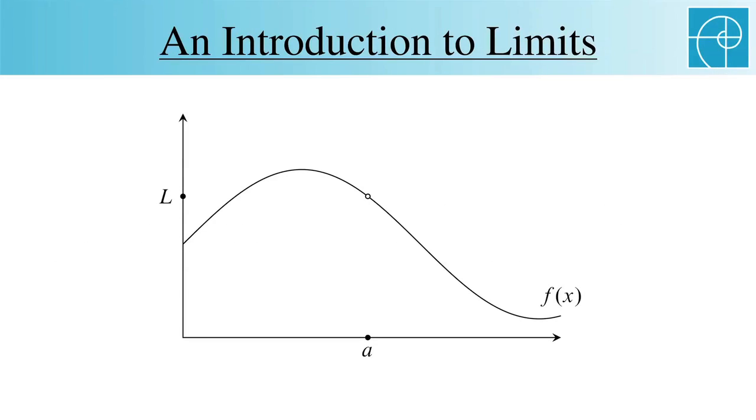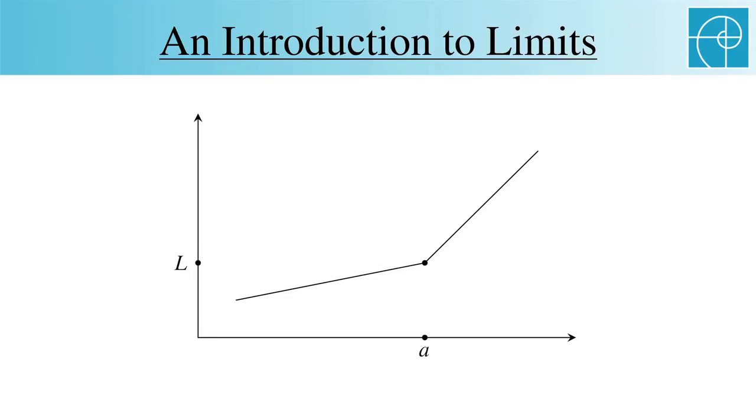Looking back at our example, if we start with a narrow interval around L, in other words all the points less than distance epsilon from L, we can trace it back to a narrow interval around a. This picture is actually a bit misleading, since it makes it seem as if the traced back interval is symmetric about a. If we look at this example, it's clear that it might not be. The neighborhood around L is symmetric, but the resulting neighborhood around a clearly isn't.